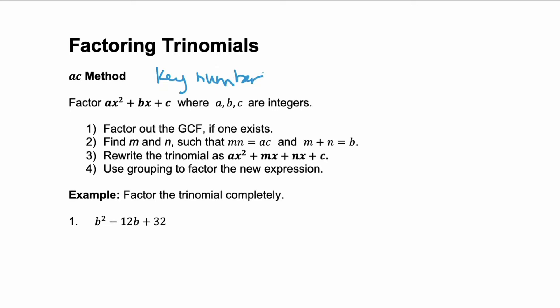In order to use this method, your trinomials need to be in the format ax squared plus bx plus c. That first term has to be your x squared term, the second has to have your x, and the last is your constant. Then you're going to follow these four steps. Step number one is so important: whenever you factor, your first step is always factoring out the GCF. If you don't have a GCF, you can move on, but always look for a GCF.